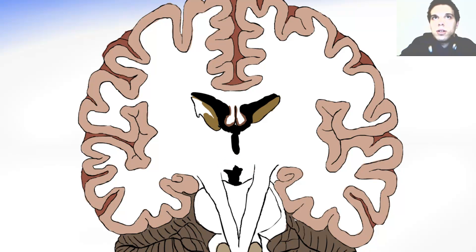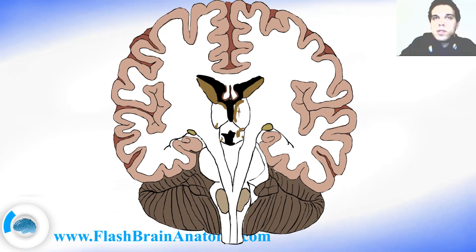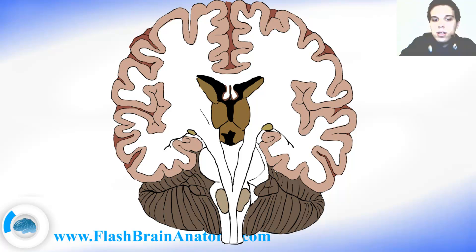Of course, we have the caudate nucleus on both sides over here and here, and down there you can notice the optic tracts. This is the optic tract on each side. Then we have the thalamus creating the walls of the third ventricle, and beneath that we have the interpeduncular fossa. The interpeduncular fossa can be seen from the outside — it is not inside the brain.